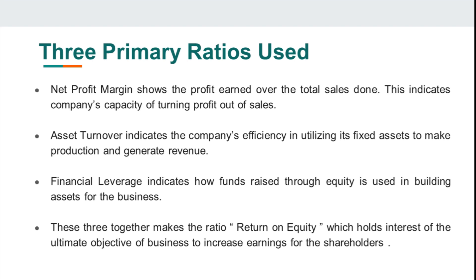Asset turnover indicates the company's efficiency in utilizing its assets to make production and generate revenue — you can take either fixed assets or total assets. Financial leverage indicates how funds raised through equity are used in building assets for the business — how those equity funds have been utilized and what assets are created out of those funds.